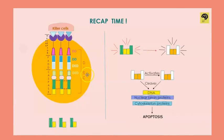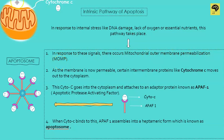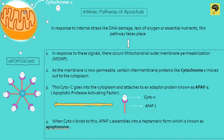That's all about the recap of the extrinsic pathway. Now we get into the main topic — the intrinsic pathway of apoptosis. The intrinsic pathway is for internal signals, something within the cell. It could be internal signals like DNA damage, lack of oxygen or essential nutrients, or even when organelles are damaged. All these stresses lead to the intrinsic pathway. The first step is mitochondrial outer membrane permeabilization, or MOMP, which simply means the mitochondrial outer membrane becomes permeable — something attaches to the mitochondria and makes it permeable, leading to the release of mitochondrial contents.